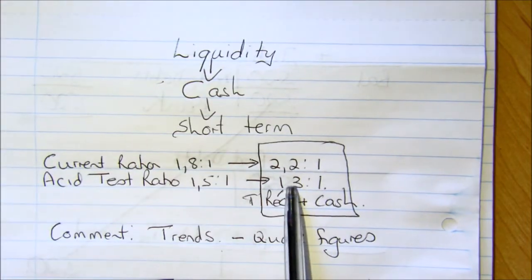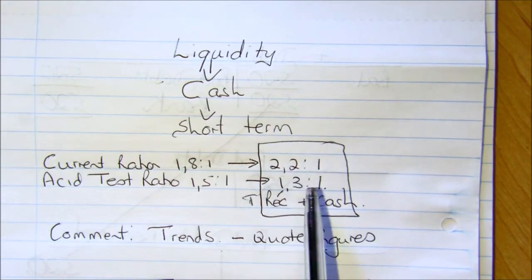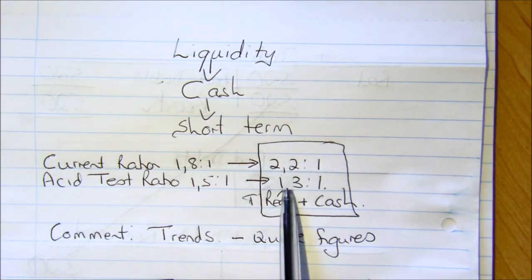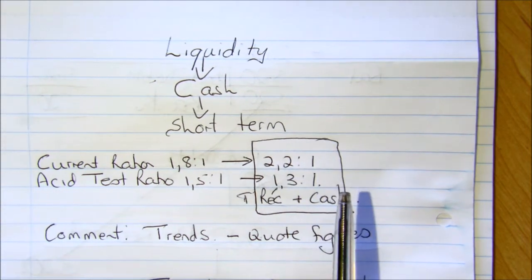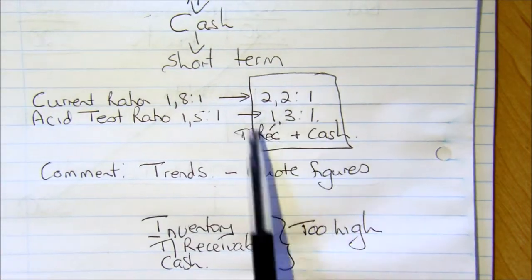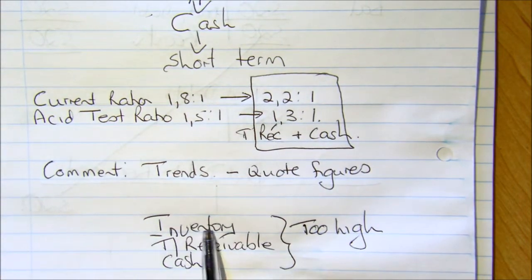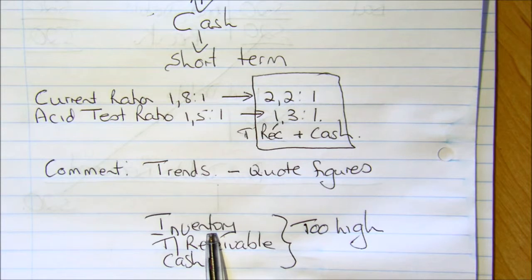So, businesses want to get the stock in and out as quickly as possible. If we look at the difference between these two ratios there, it might indicate, if we subtract those two, 0.9, that is what is made up to. You could say nearly one of the current assets is made up of inventory. So, maybe they need to look and see if they're not holding too much inventory.